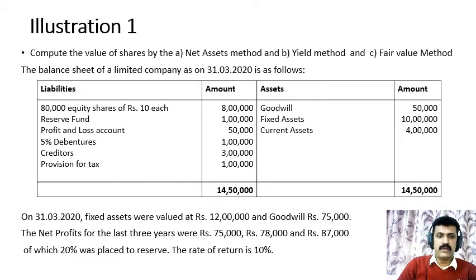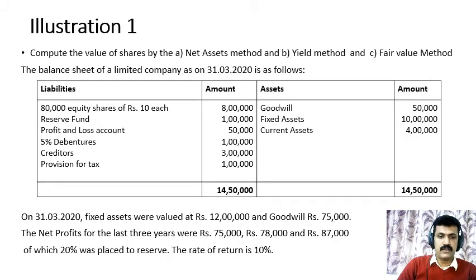On the liability side: 80,000 equity shares of ₹10 each — ₹8 lakhs; Reserve Fund — ₹1 lakh; Profit and Loss Account — ₹50,000; 5% Debentures — ₹1 lakh; Creditors — ₹3 lakhs; Provision for Tax — ₹1 lakh. On the asset side: Goodwill — ₹50,000; Fixed Assets — ₹10 lakhs; Current Assets — ₹4 lakhs; total balance sheet value ₹14,50,000. Adjustments: Fixed Assets revalued at ₹12 lakhs and Goodwill at ₹75,000. Net profits for the last three years were ₹75,000, ₹78,000 and ₹87,000, of which 20% was placed to reserve. The normal rate of return is 10%.